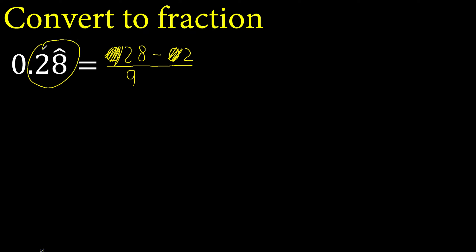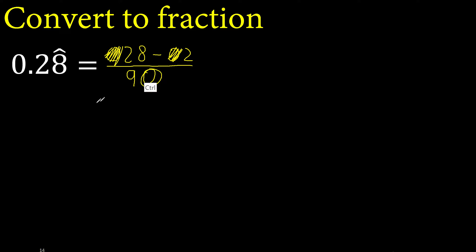After the point, there is one number outside the symbol, therefore 0 always 0, one number one time.